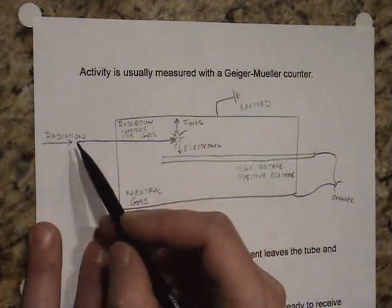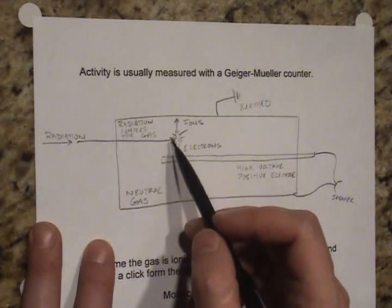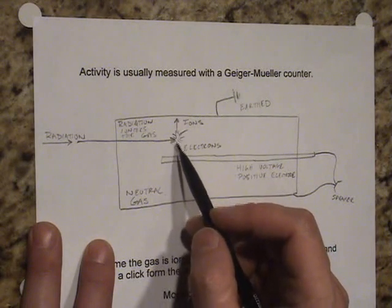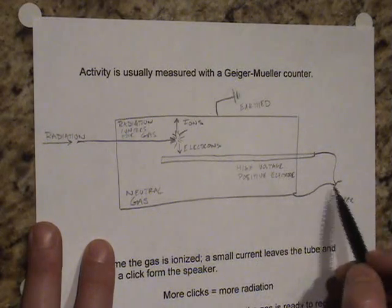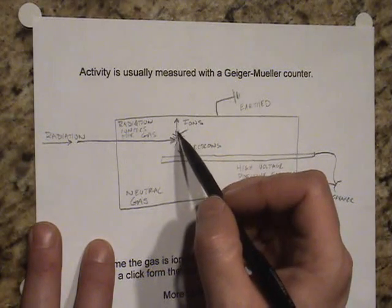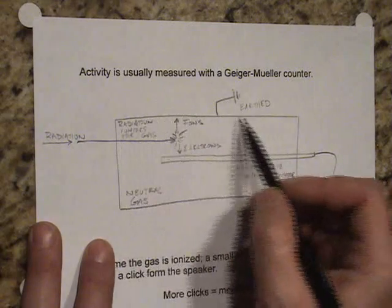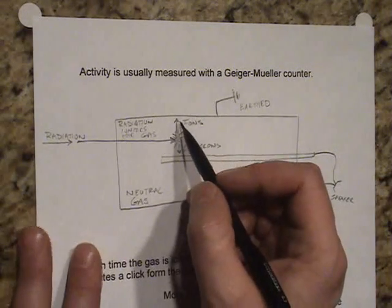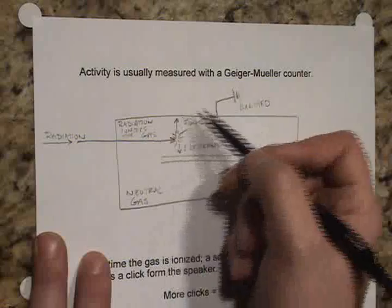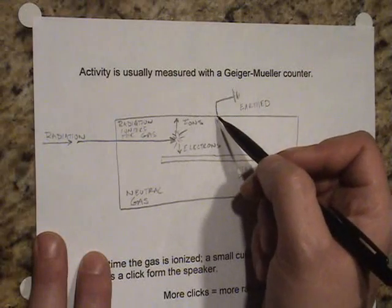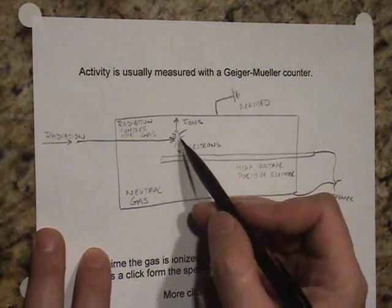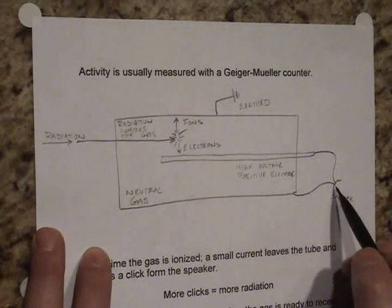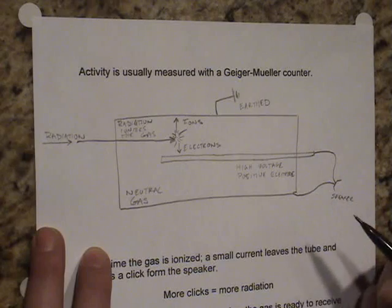So every time that a particle passes through here, ions are created. The negative electrons travel towards the wire, where they travel down the wire and out to the speaker. And as they touch the outer casing, they pull electrons up through the ground wire and then re-neutralize themselves. So they go right back to being a neutral gas. In the meantime, the electrons travel down through the wire, out through here into the speaker, where it makes an audible click.